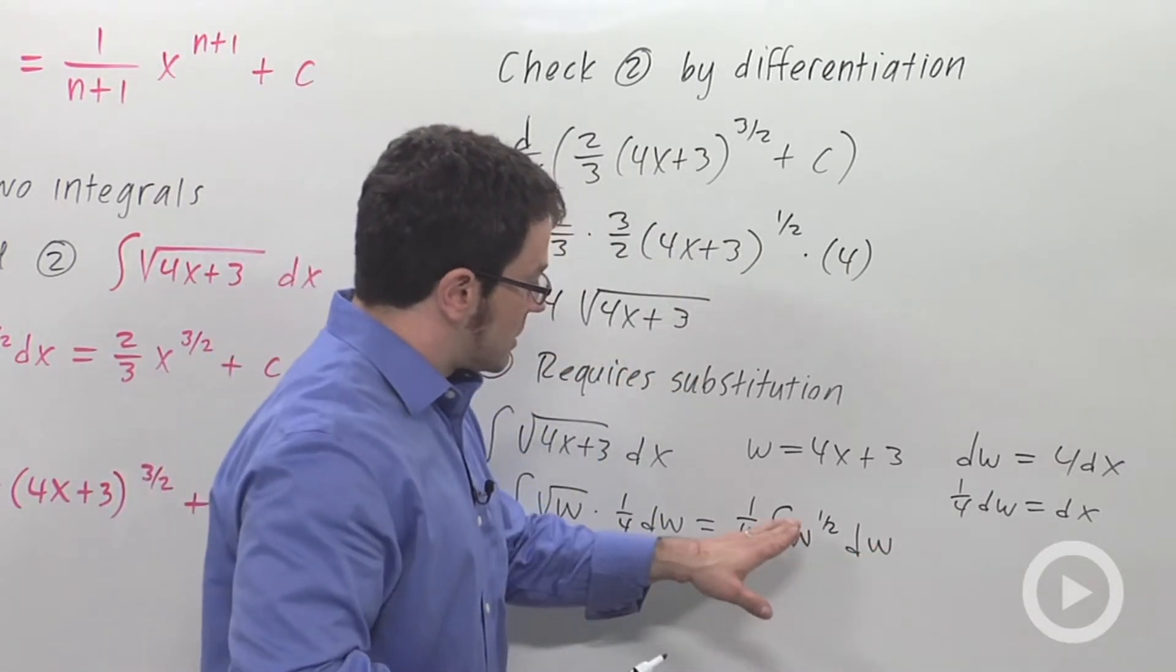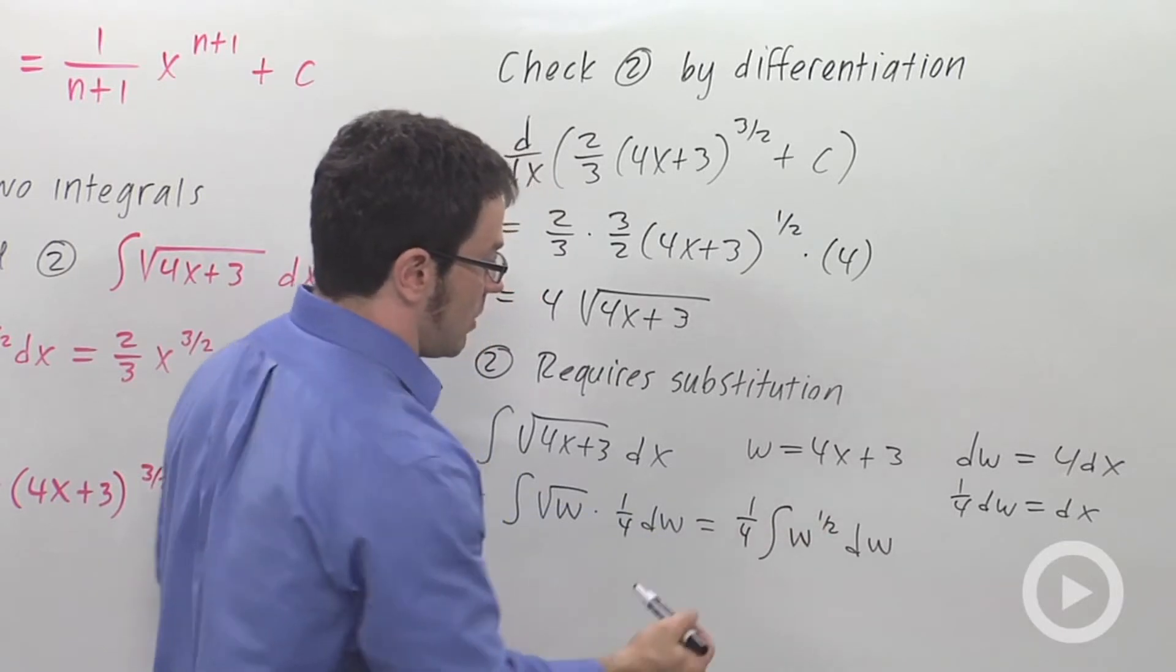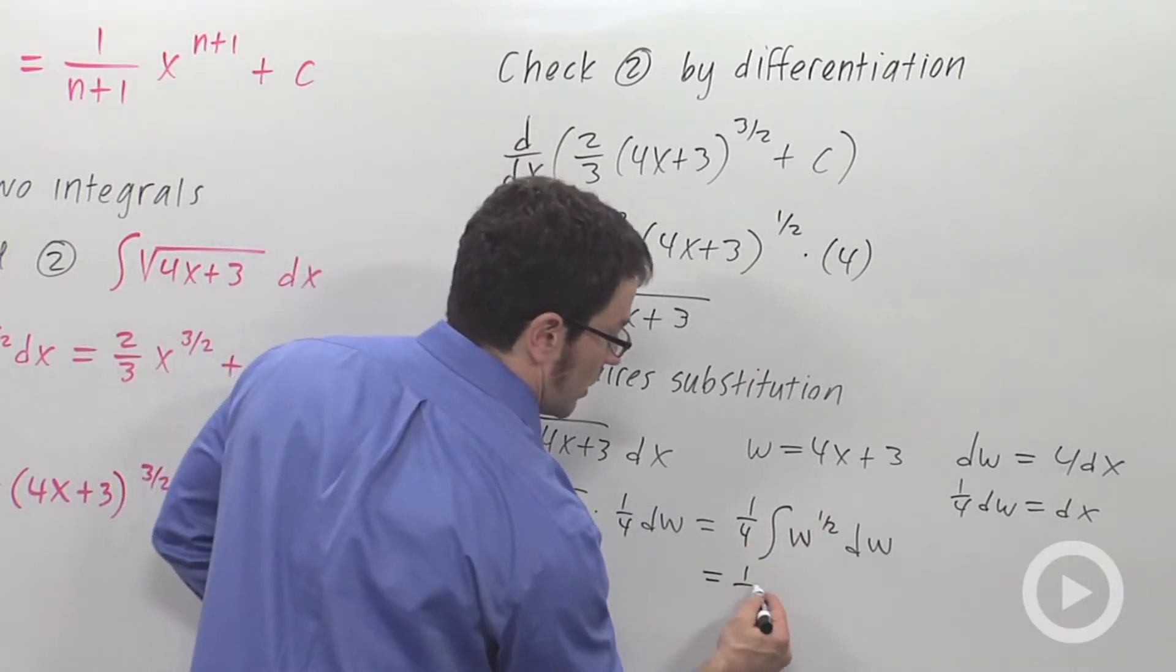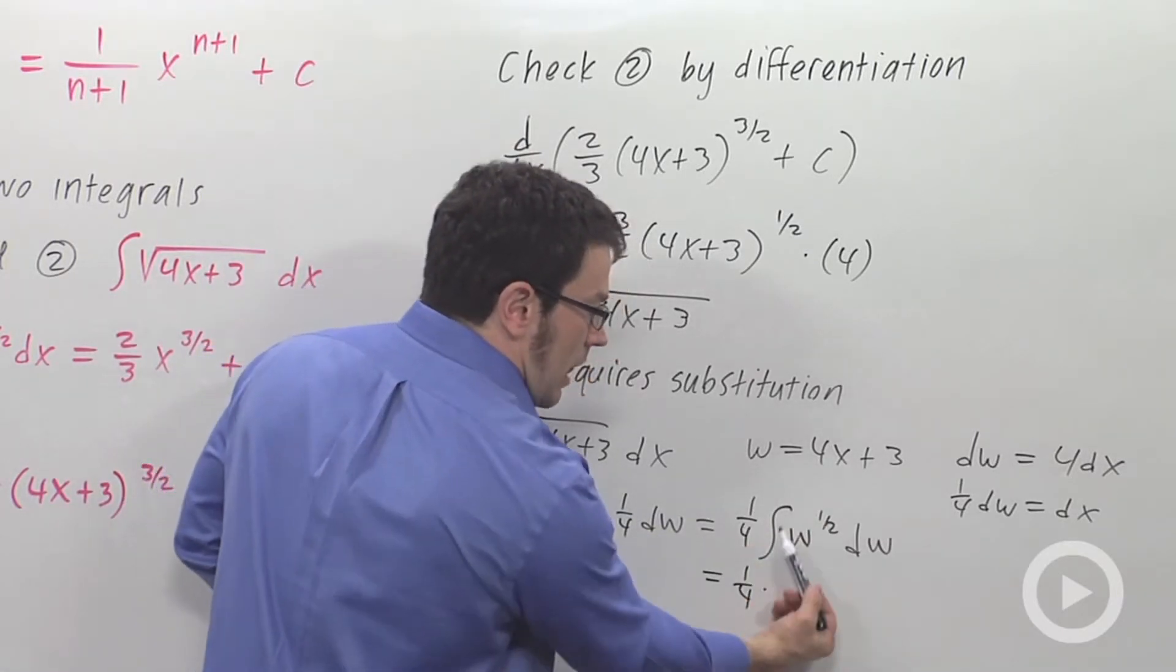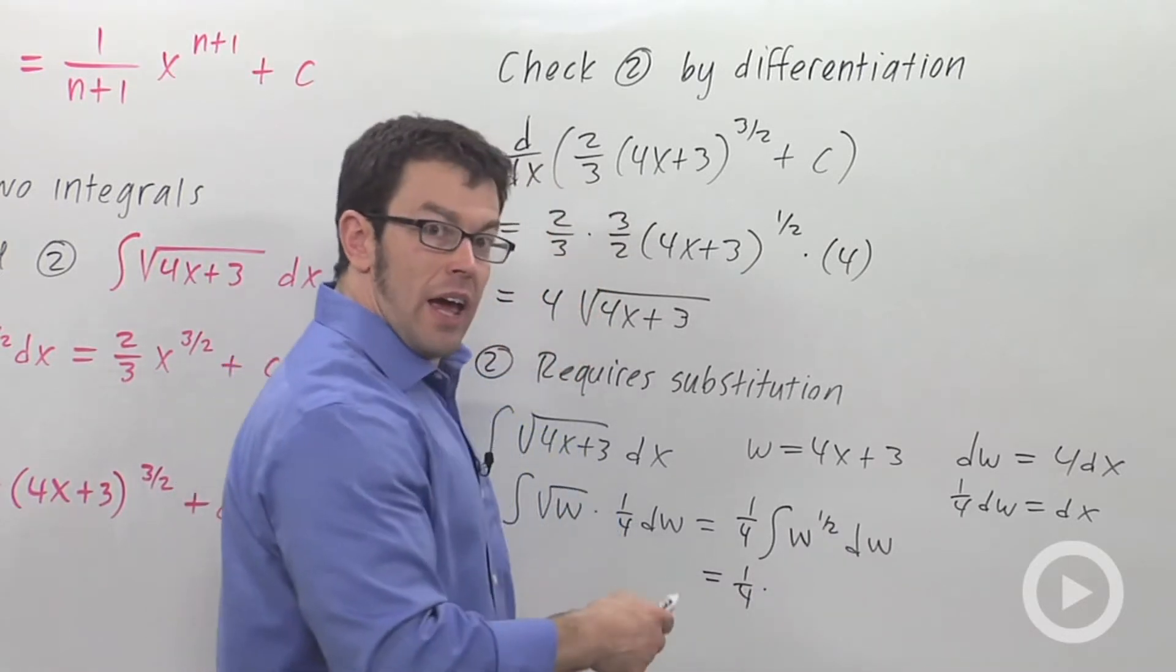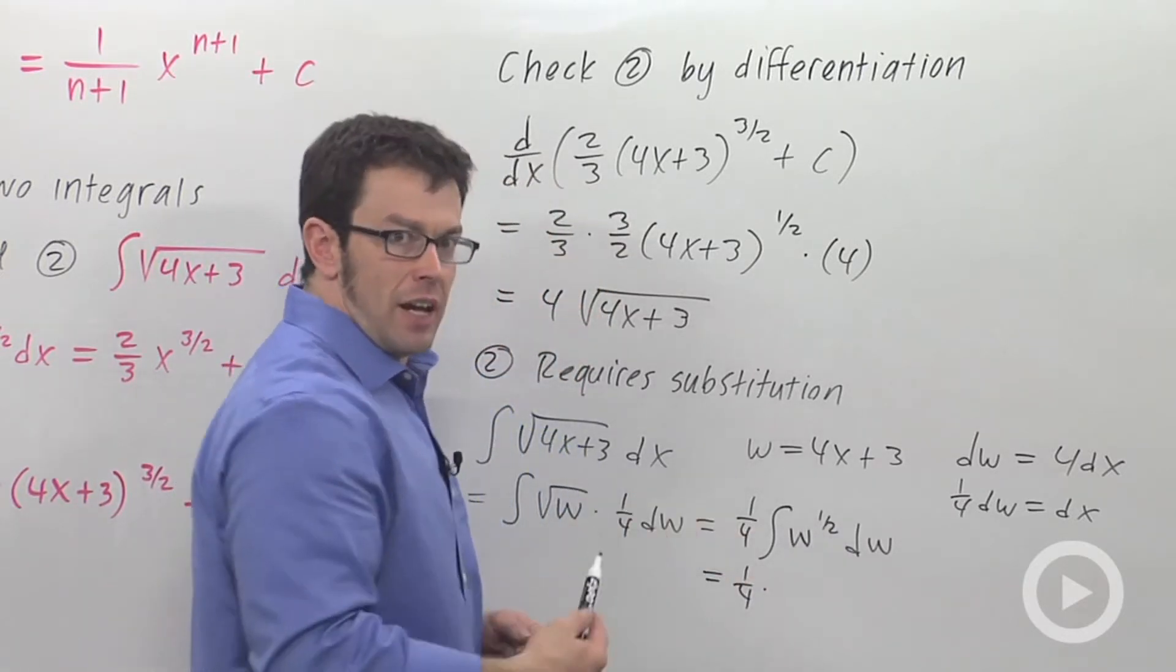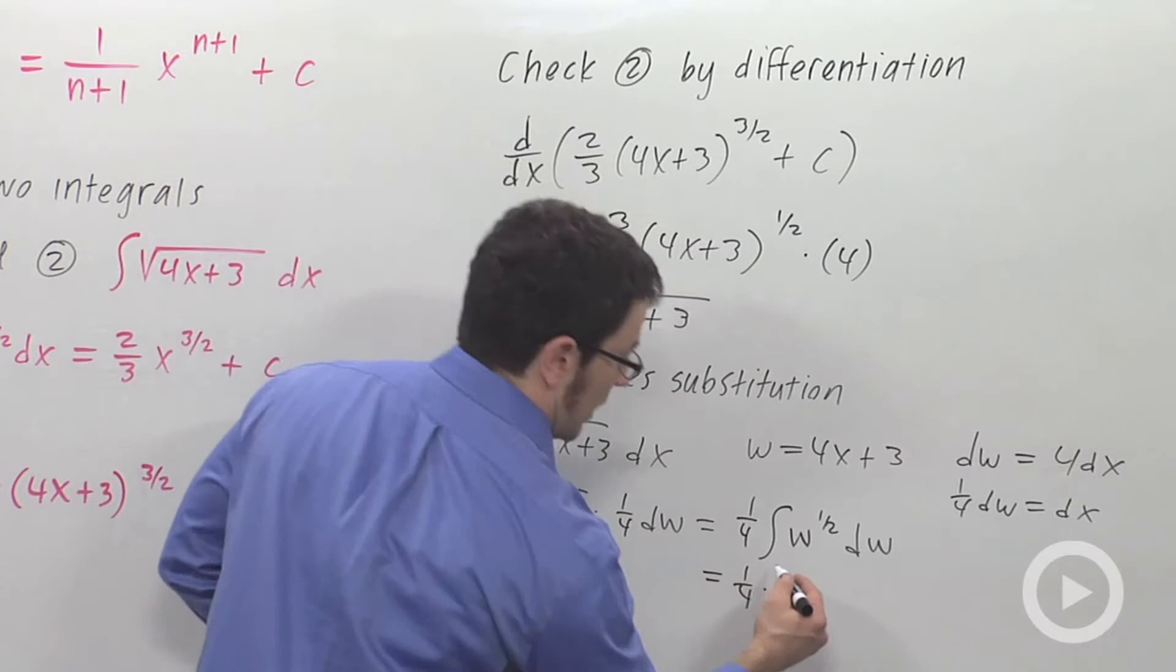Here I do have just a simple variable raised to a power. So it's 1 quarter. I have to raise the exponent by 1, so 1 half becomes 3 halves. And then dividing by 3 halves is the same as multiplying by 2 thirds.